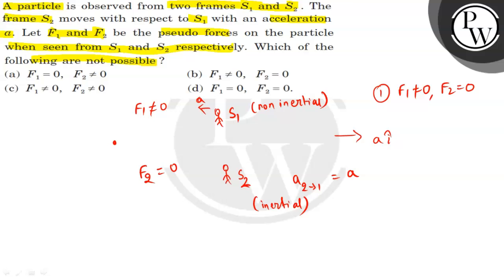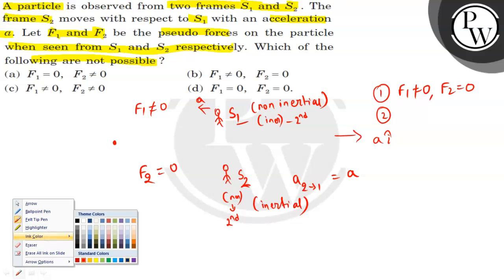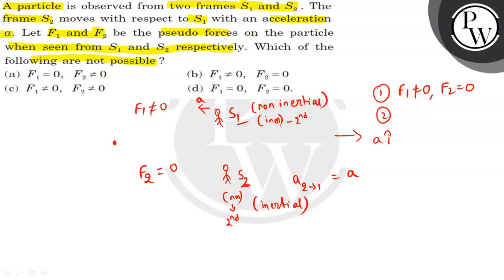Now let's reverse it. S1 will be steady, meaning S1 is an inertial frame of reference, and S2 will move with acceleration a, making S2 non-inertial and S1 inertial in this second case.